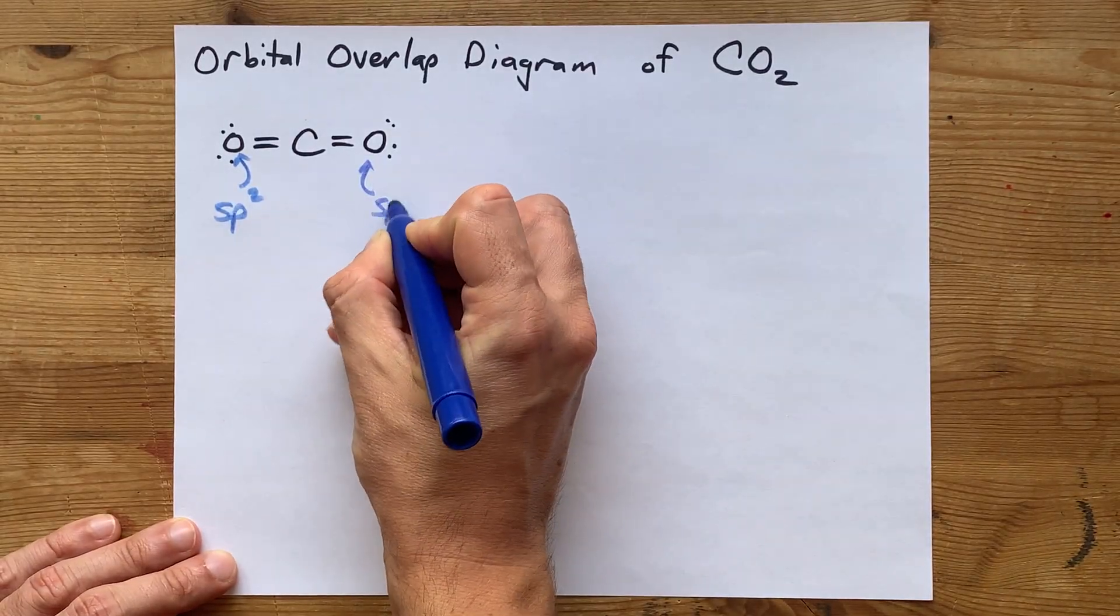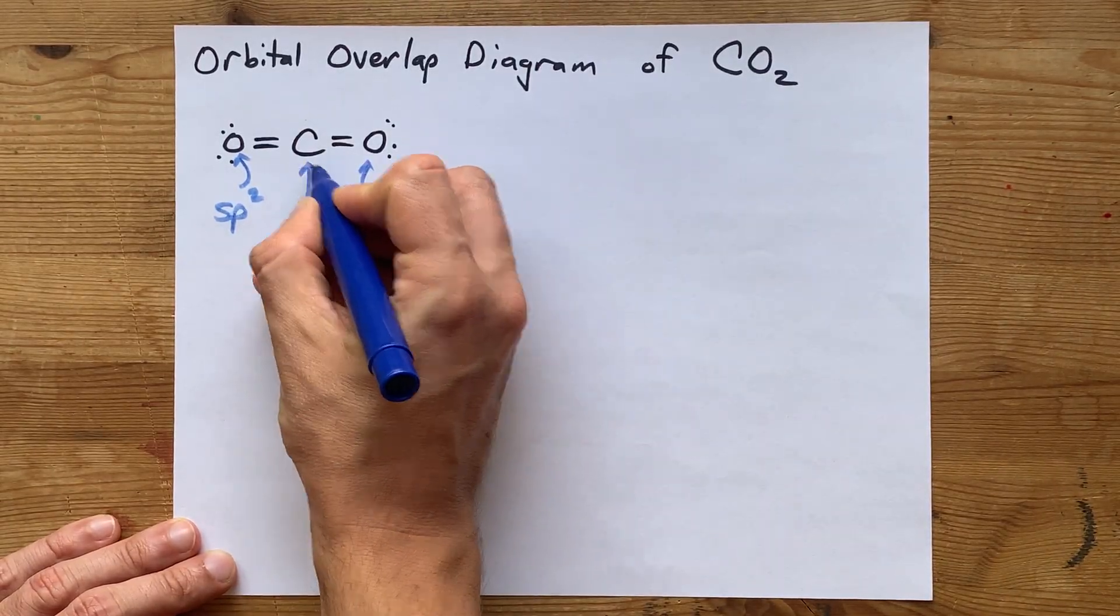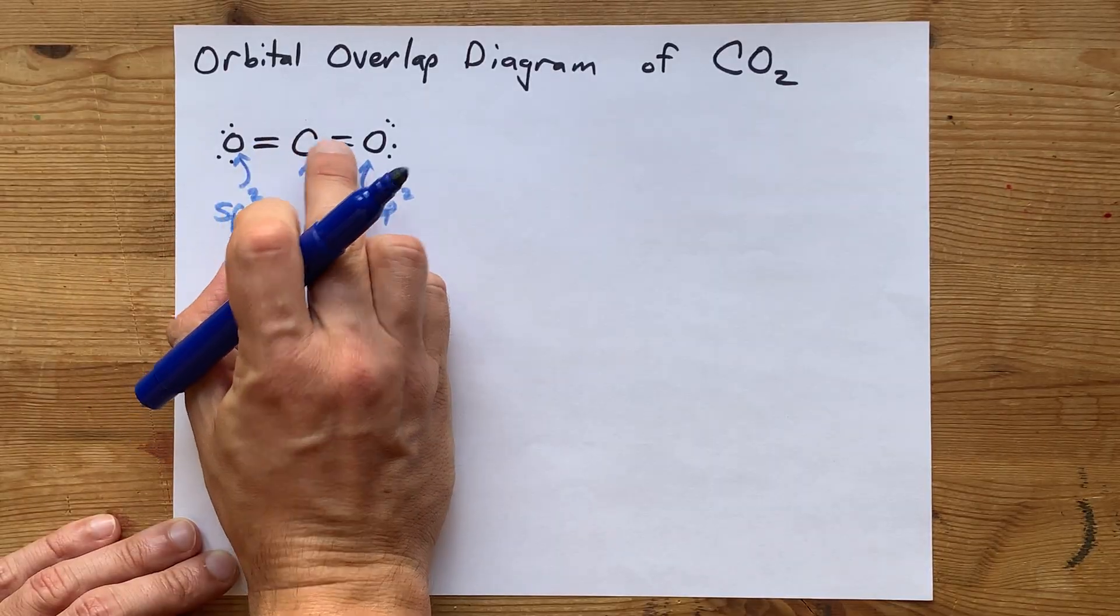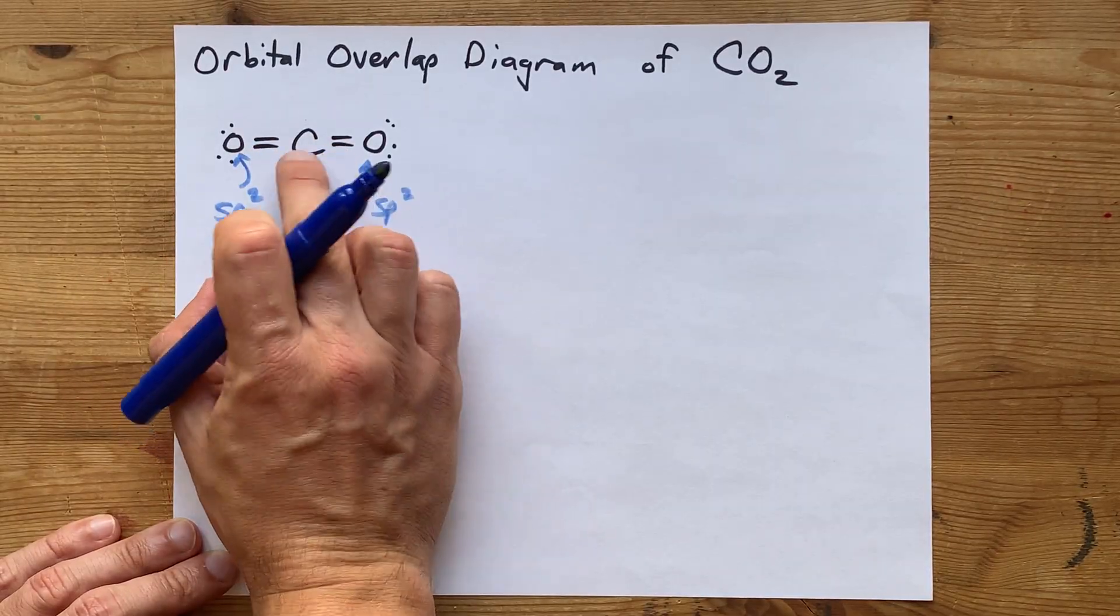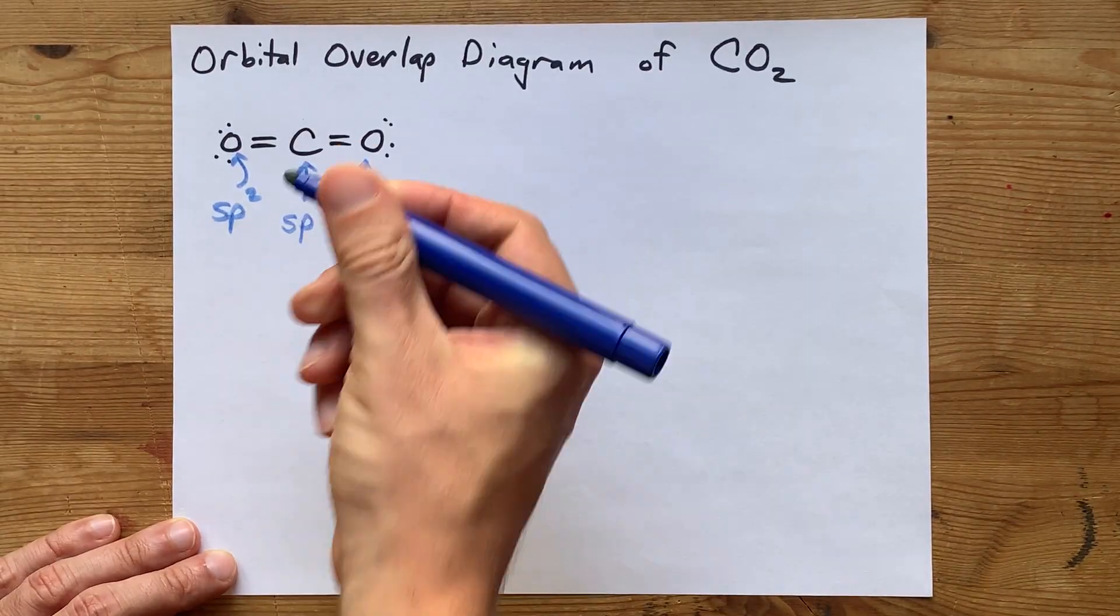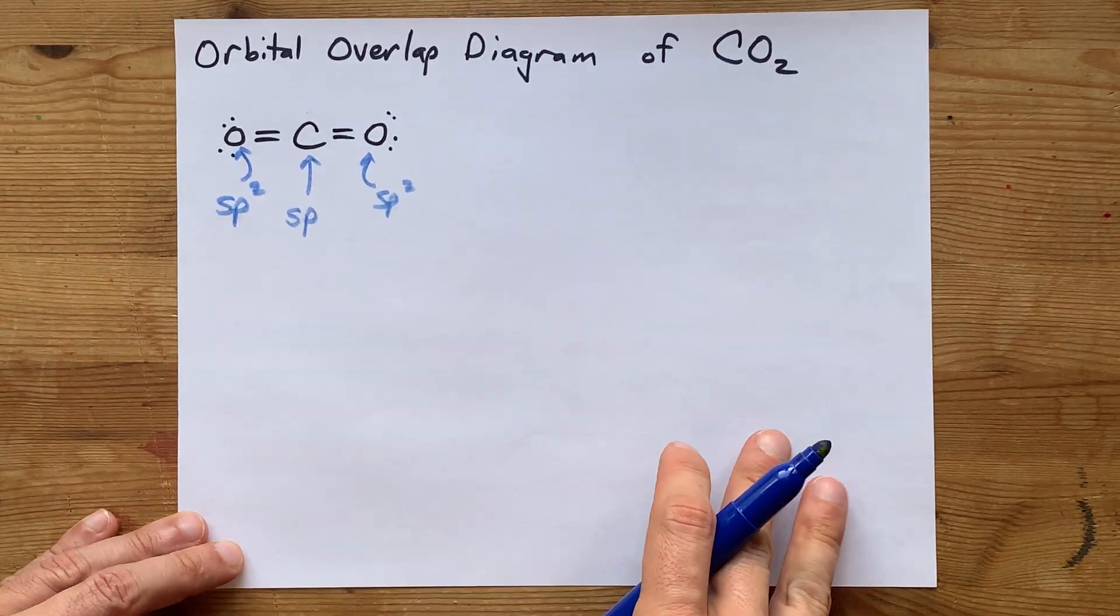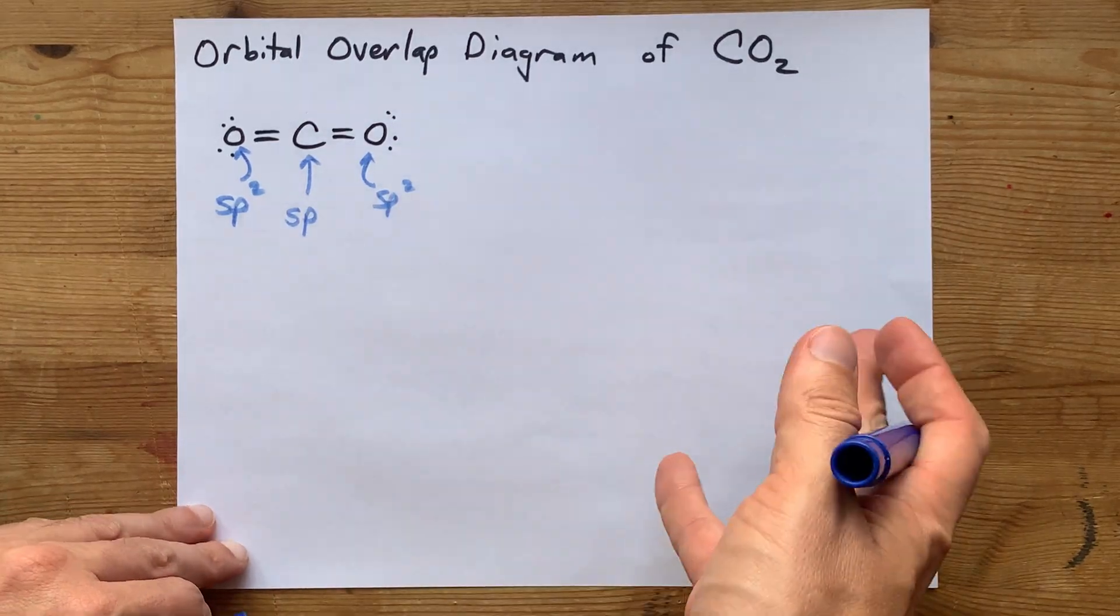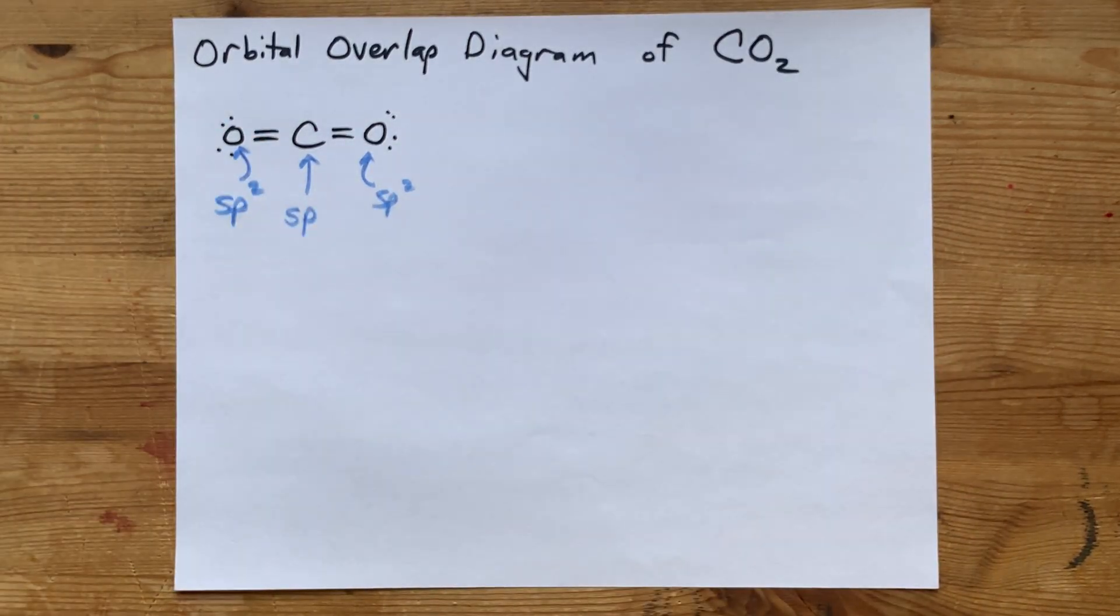Same for this oxygen for the same reason. And this carbon has two pi bonds, one, two, connected to it. That means it's going to hybridize the s and one of the p's, but leave two of the other p's unhybridized, so that they can overlap to make a pi bond.